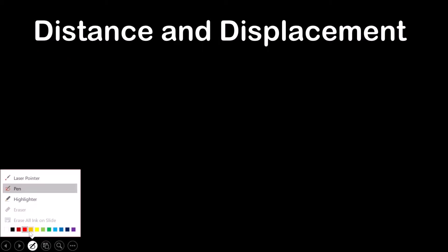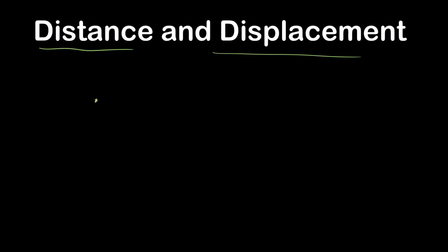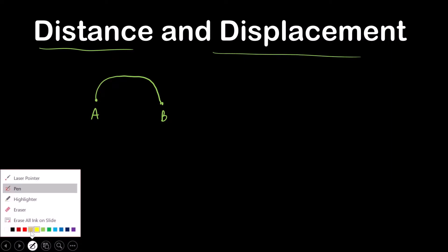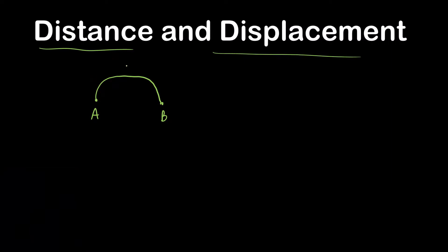Let us first understand the difference between distance and displacement. Suppose a person starts moving from point A and reaches point B, traveling a semicircular path. The exact distance that person has traveled along that path is called distance.